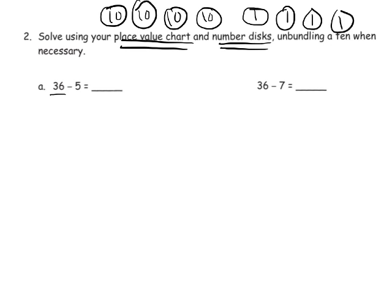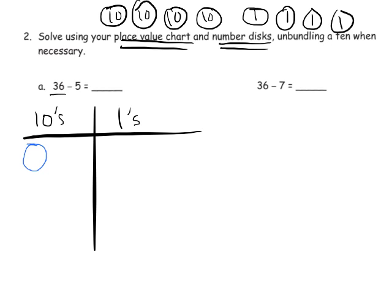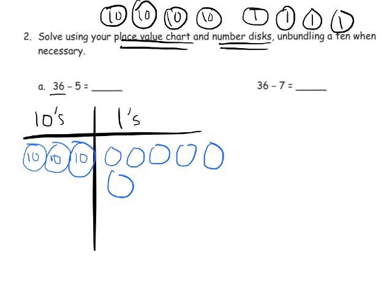For example, so we're going to take 36, and we're going to model 36. And so what 36 is going to look like is they're going to have a place value chart, and the first thing they're going to do is model three tens in the tens column and six ones in the ones column. So there we have modeled 36.